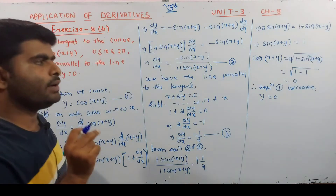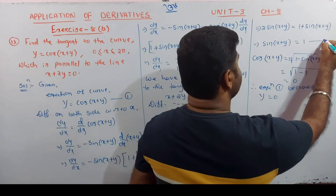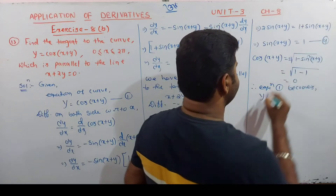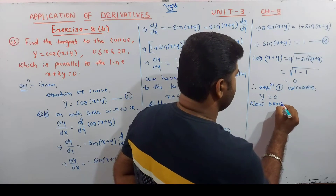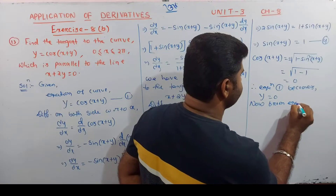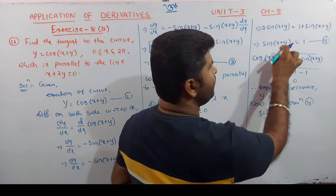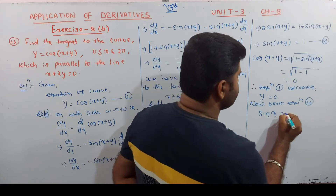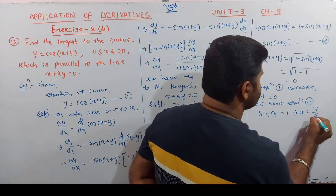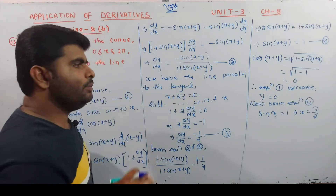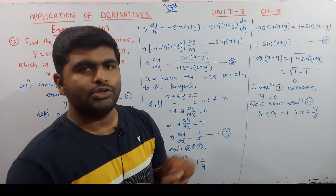If y = 0, we can find x. From sin(x) = 1 (since y = 0), x = π/2. So the point is (π/2, 0).